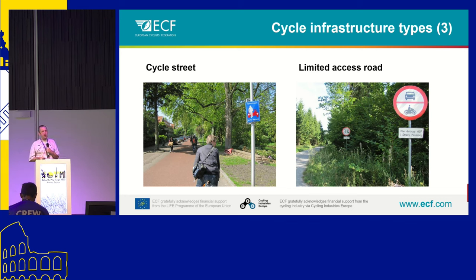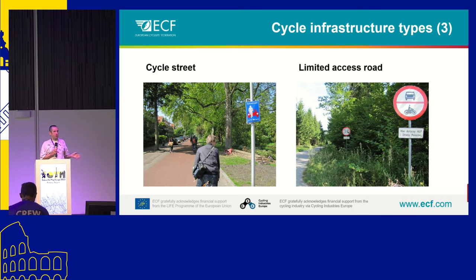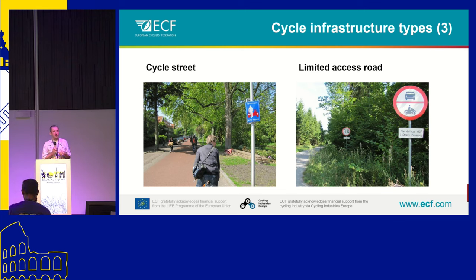Something we added recently is limited access roads. The name probably isn't the best, but it's generally all roads where you have some motorized vehicle traffic — for example, agricultural vehicles or area residents. These are not cycle tracks in the traditional sense, but they are still an important part of cycle networks, especially in rural areas.